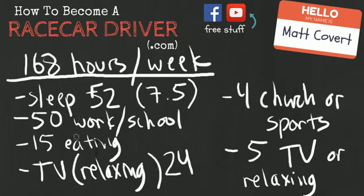Let's say they spend 50 hours on either work or school, and that includes commuting. That's pretty average, that's full-time job, full-time school. 15 hours a week eating, and 24 hours either watching TV or relaxing, doing something that just helps you chill. And we'll add four hours for going to church on Sundays or maybe watching sports in the afternoon, and we'll add another five hours for watching TV or relaxing again.